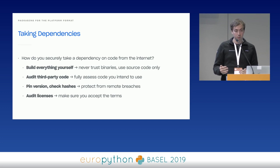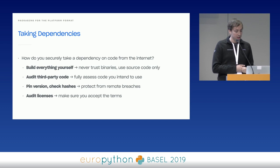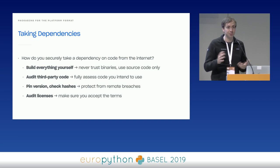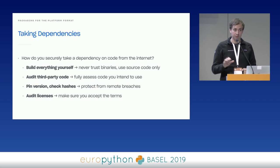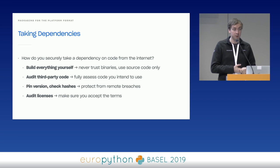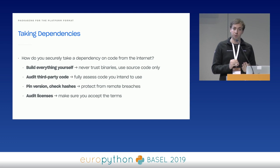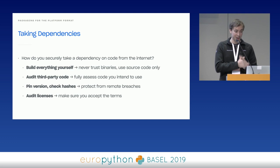The important thing to remember is that third-party dependencies become part of your app. We came up with four rules. First, build everything yourself — don't trust binaries; if you have a choice between a binary and source code, pick source code. Second, you can audit that code — look at it and really see what it does. Third, pin the versions of your dependencies and check the hashes — this is really important to protect from remote breaches, so if a dependency version is compromised, your app doesn't get compromised too. Fourth, make sure to audit the licenses — understand and accept the terms of all the licenses of each package you use.